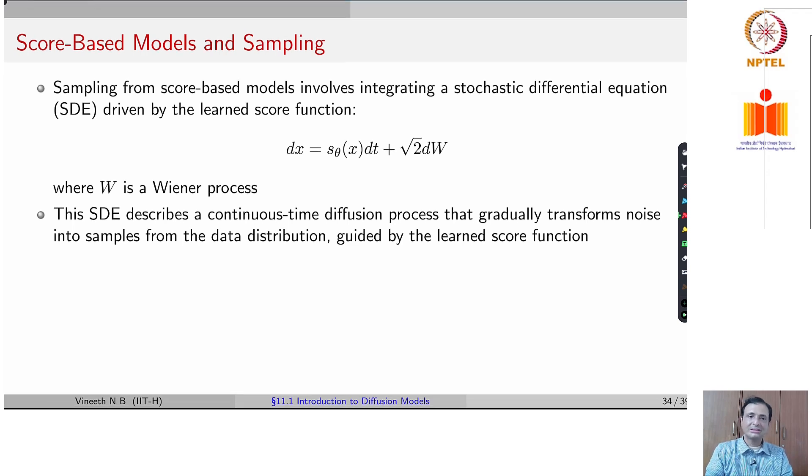In score based models, you end up integrating a stochastic differential equation that is driven by the learned score function. So you have dx is given as s theta of x, that is your learned score function dt plus root 2 dw, where w is a Wiener process. This SDE is a continuous time diffusion process that gradually transforms noise into samples from the data distribution.